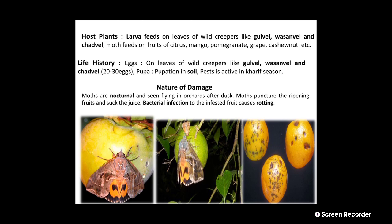The nature of damage: moths are nocturnal and are seen flying in orchards after dusk. The moths puncture the ripening fruits and suck the juice, and by sucking, bacterial infection to the infested fruits causes rotting. In the image we can see the moths sucking the cell sap or juice from the fruits.